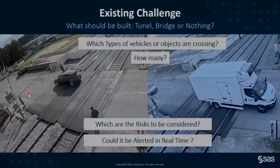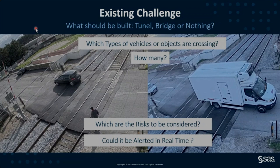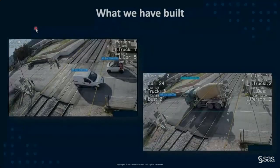They needed to know which types of vehicles were passing by — cars, big trucks, or only pedestrians — so they could decide whether they needed a very robust bridge or just a lighter pedestrian bridge. We also got a second request: for locations where they decided not to build a bridge, could we create a system that generates alerts in dangerous situations, for example if a car gets stuck on the railway when a train is passing?